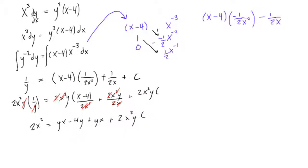All right, so we can combine these yx's into 2xy. So we get 2x squared is equal to 2xy minus 4y. Oh, and then we have the last term, plus 2x squared y times c.